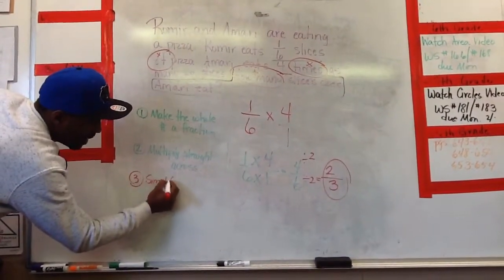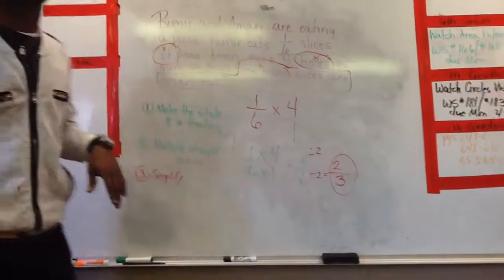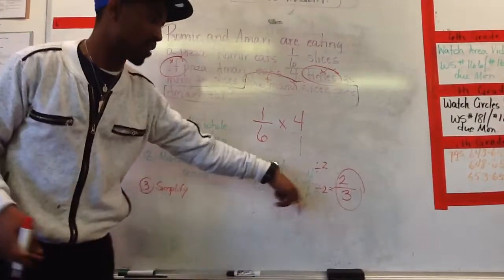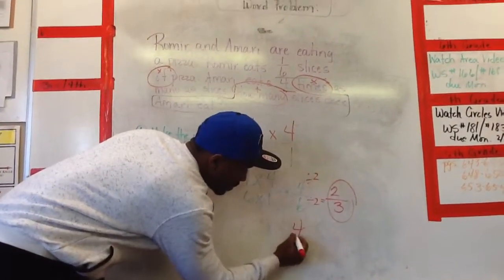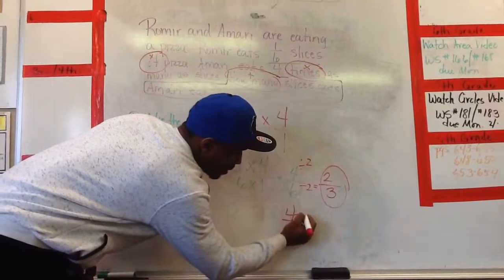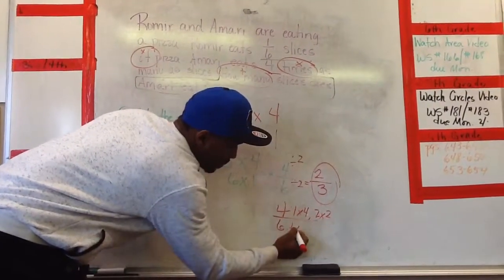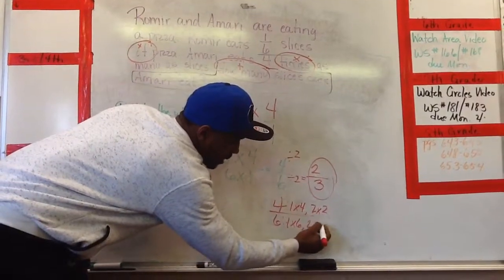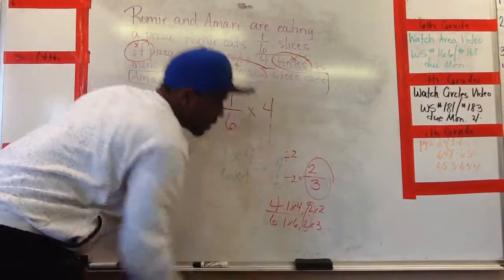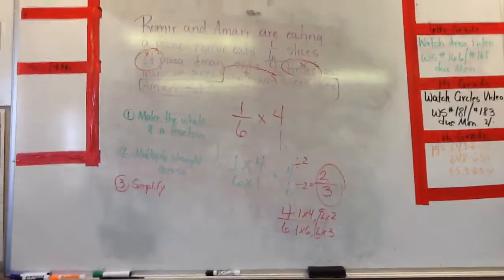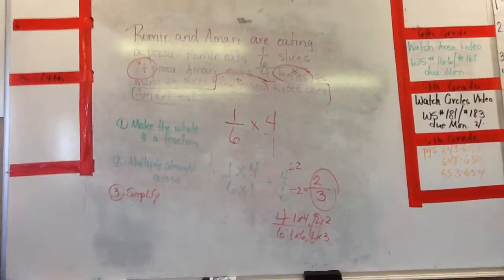Now sometimes it'll come out simplified. Sometimes you won't have to, but it's always good to check. If I wanted to set these up. Why did I pick two? Because it was the greatest common factor. That's why I picked two. Okay. And that concludes it.